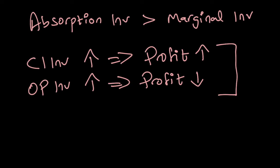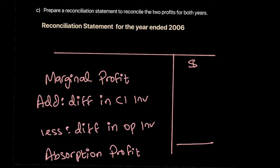To summarize: higher closing inventory means higher profit; higher opening inventory means lower profit. Using this analysis, we can reconcile marginal and absorption profits. We'll draw a reconciliation statement for question 1 for the year 2006. Start with the marginal profit, add the difference in closing inventory, and less the difference in opening inventory, to arrive at the absorption profit.